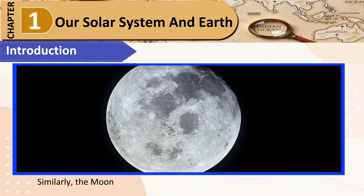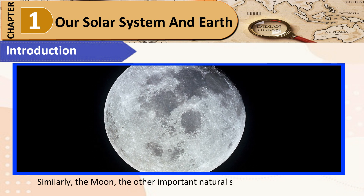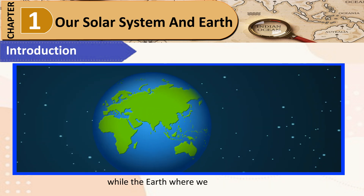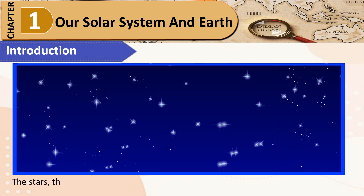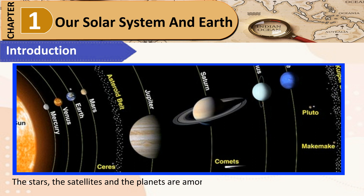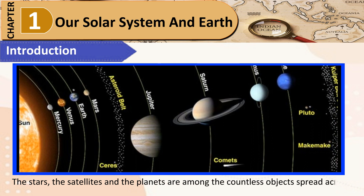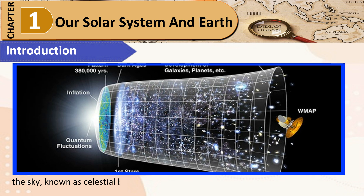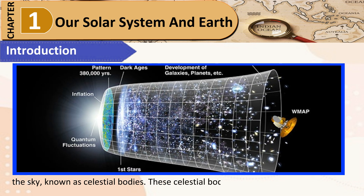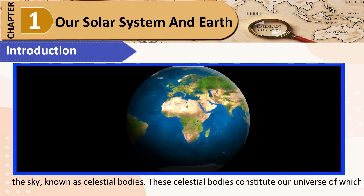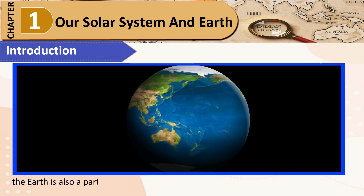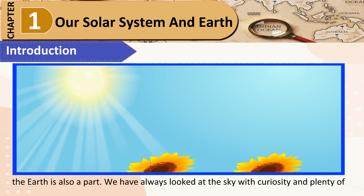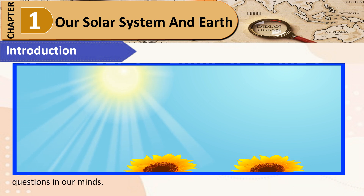Similarly, the Moon, the other important natural source of light, is a satellite, while the Earth where we live is a planet. The stars, the satellites, and the planets are among the countless objects spread across the sky, known as celestial bodies. These celestial bodies constitute a universe of which the Earth is also a part.